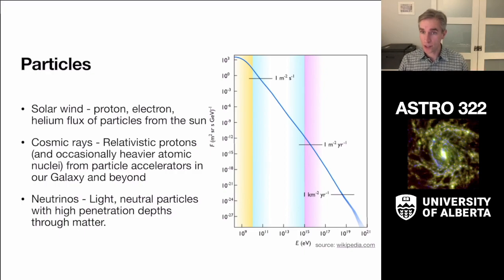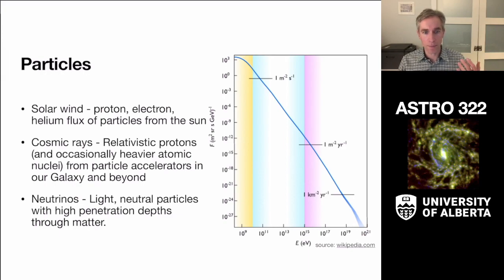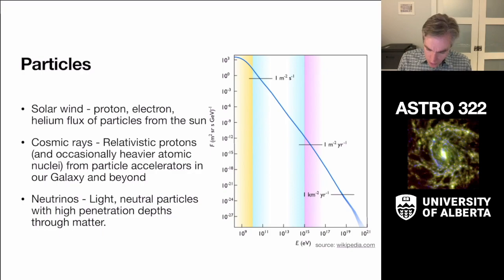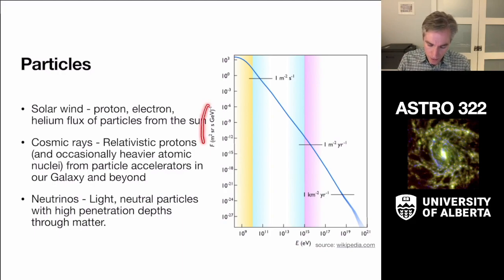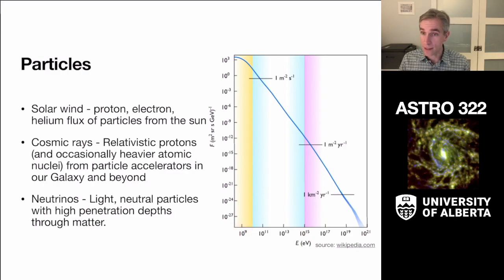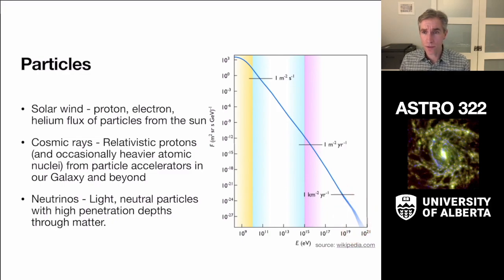We typically detect cosmic rays by direct detection — going through a particle detector — or they collide with the upper atmosphere and produce cascades of light through Cherenkov radiation, as well as high-energy exotic particles like pions and muons that arrive on the ground. The figure here shows the density distribution of cosmic rays arriving at Earth, measured as flux versus particle energy. For protons with rest mass energy of 10⁹ eV, we see particles arriving at 10¹⁹ to 10²¹ eV — which in SI units is 100 joules — pretty substantial for a single particle.